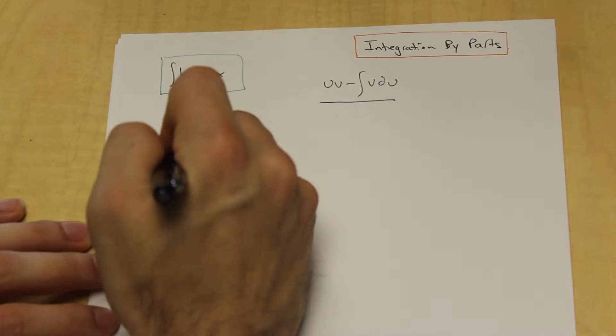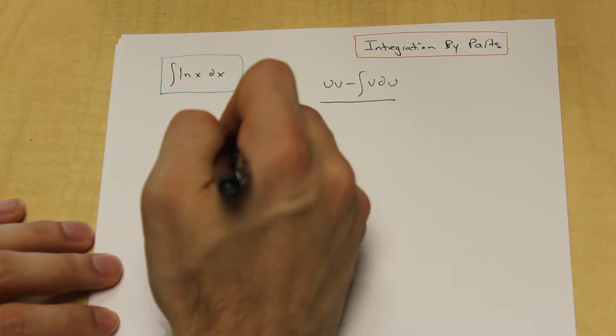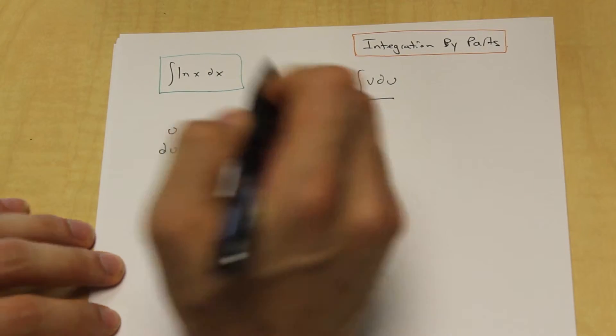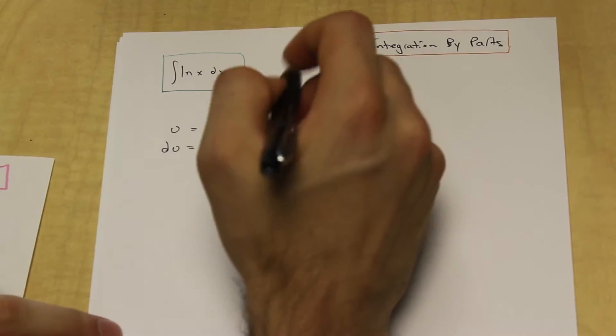Now we're going to differentiate u with respect to x. And the derivative of ln x is 1 over x dx, because we're implicitly differentiating.